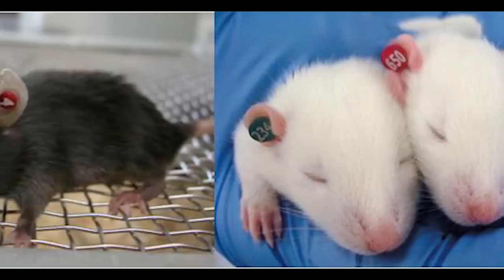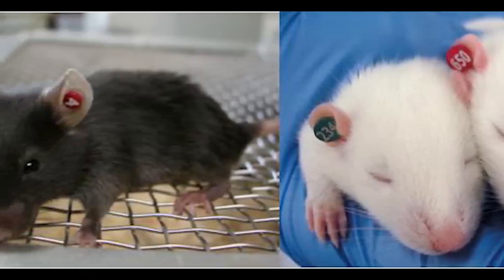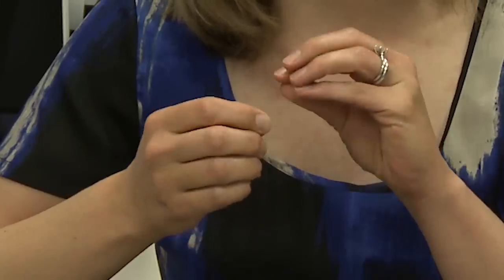The technicians and caretakers use ear tags to identify the animals and take small tail samples, and that's what we use to extract DNA so we know which ones we want to use to set up experiments.